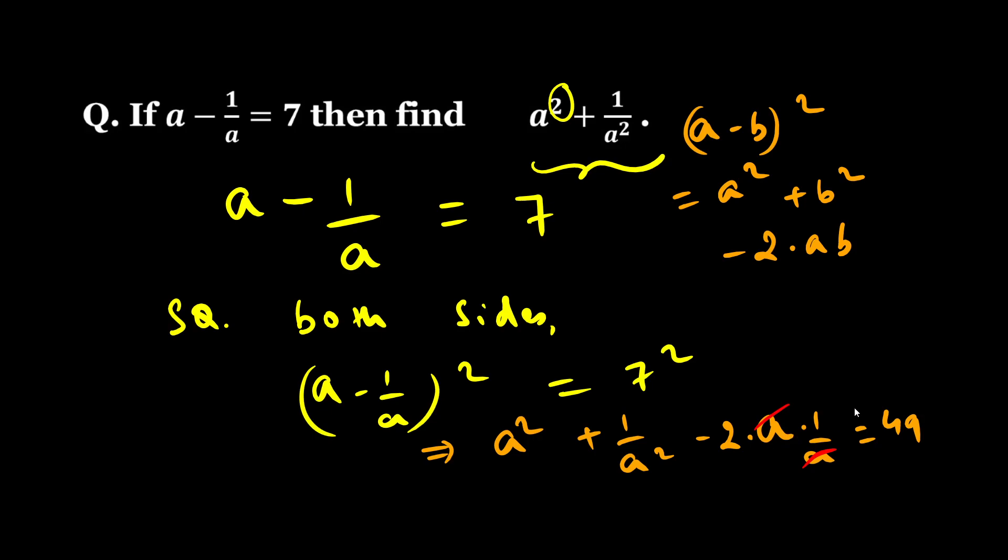Now here I can cancel out a and a, so I will be left with a squared plus 1 by a squared. This 2 I can take to right hand side, right?